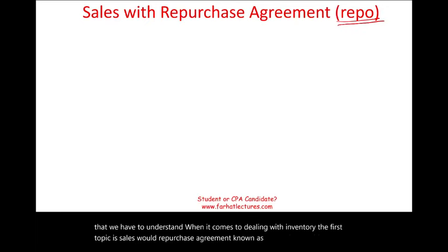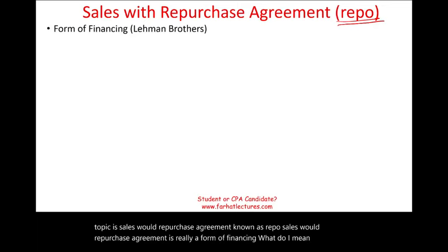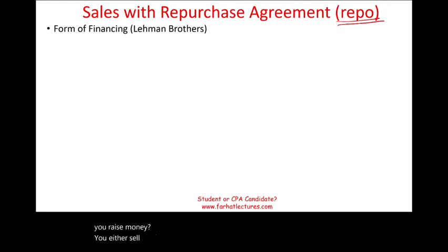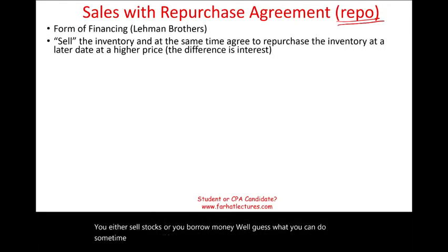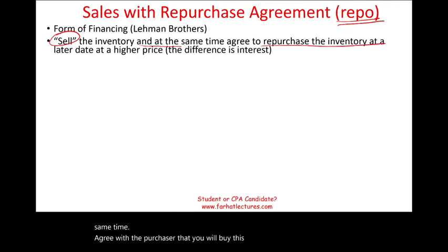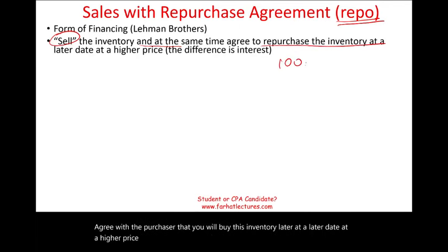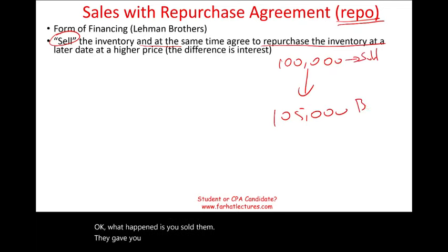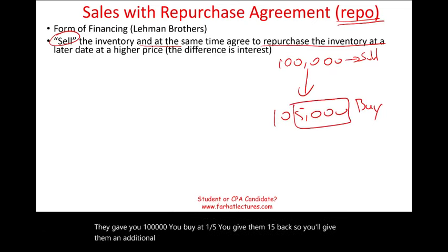The first topic is sales with repurchase agreement, known as repo. Sales with repurchase agreement is really a form of financing. Financing is how you raise money — you either sell stocks or you borrow money. You can also sell your inventory and at the same time agree with the purchaser that you will buy this inventory back at a later date at a higher price. Simply put, you sell them something for $100,000 and buy it back at $105,000. That additional $5,000 is technically interest. This is called repo.